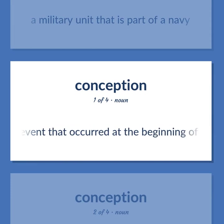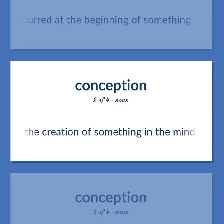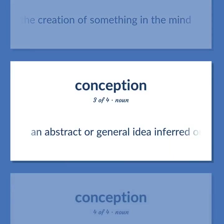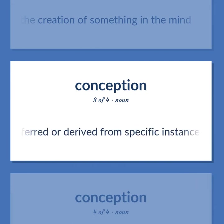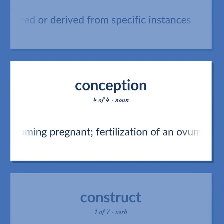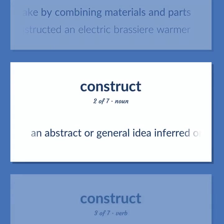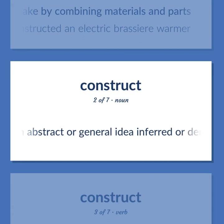The event that occurred at the beginning of something. The creation of something in the mind. An abstract or general idea inferred or derived from specific instances. The act of becoming pregnant — fertilization of an ovum by a spermatozoan. Make by combining materials and parts — some eccentric constructed an electric brassiere warmer. An abstract or general idea inferred or derived from specific instances.